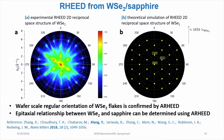Through analysis of the RHEED two-dimensional reciprocal space mapping, we were also able to determine the epitaxial relationship between tungsten diselenide and the sapphire substrate, which turns out to be a parallel epitaxial relationship.